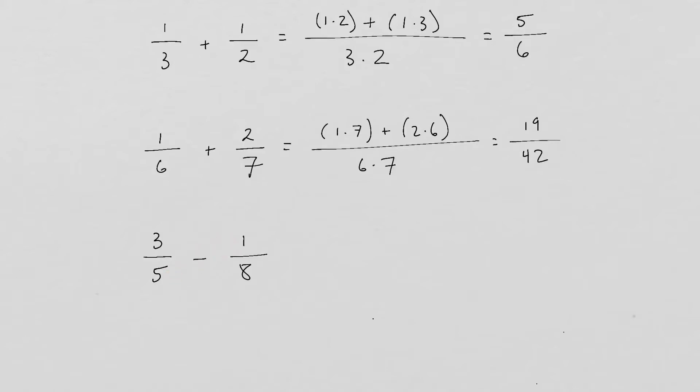So what that looks like is for the numerator, 3 times 8. And since we're subtracting, we're just going to subtract 1 times 5. And for our denominator, once again, we just go straight across, which is 5 times 8.